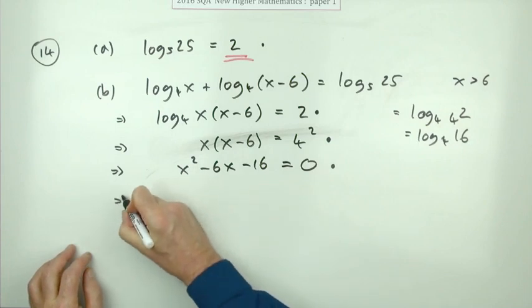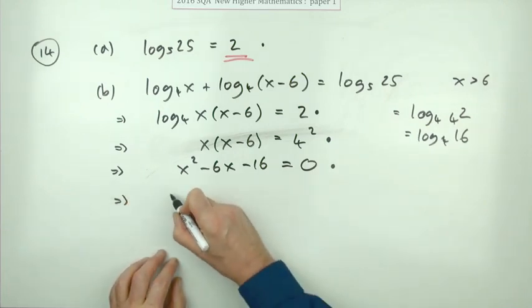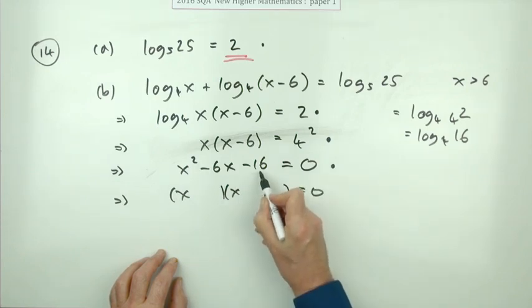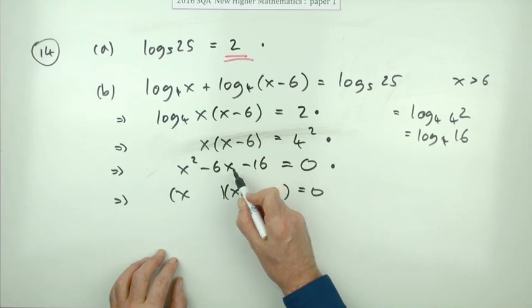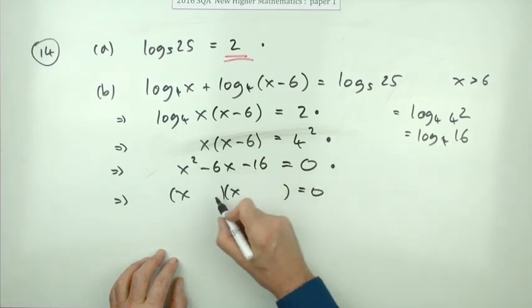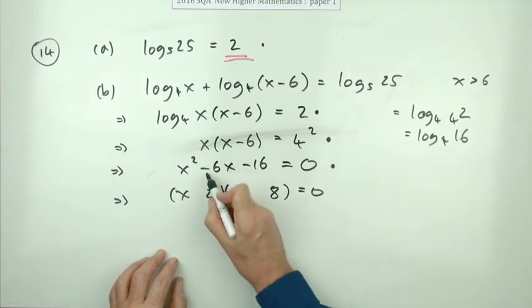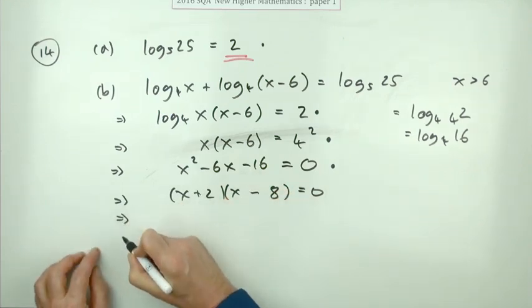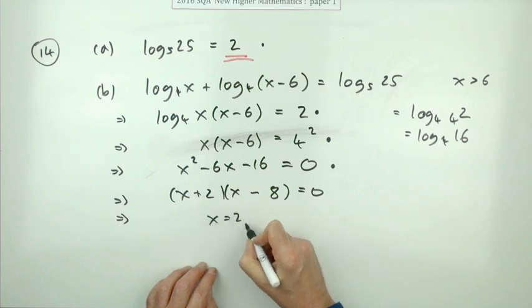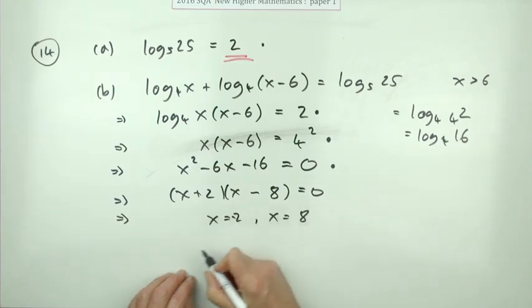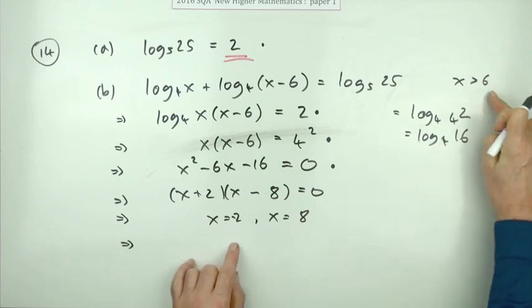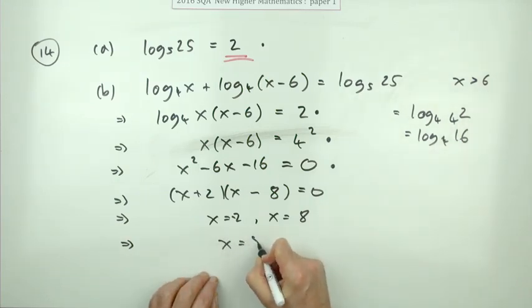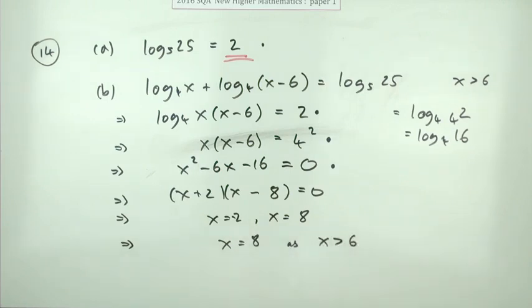Now solve it. It's just x's that multiply to give 16 with a difference of 6—that's 2 and 8. So (x + 2)(x - 8) = 0, giving x = -2 or x = 8. But you had to begin with x greater than 6, which means x equals 8 is the answer.